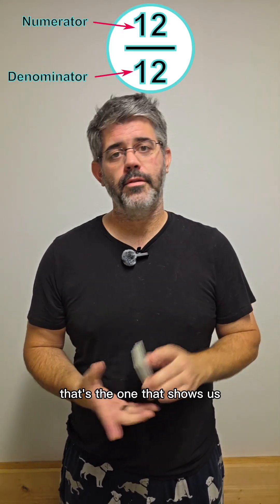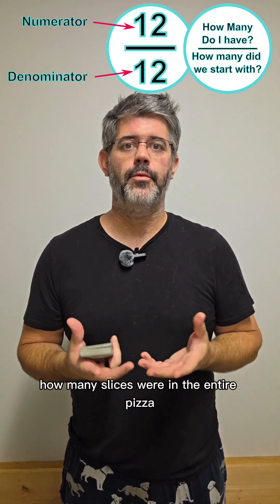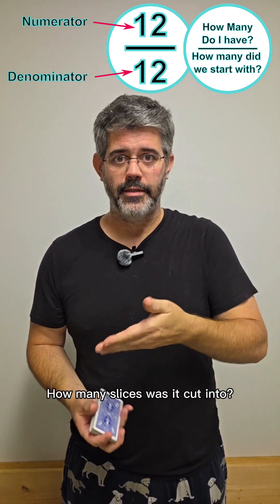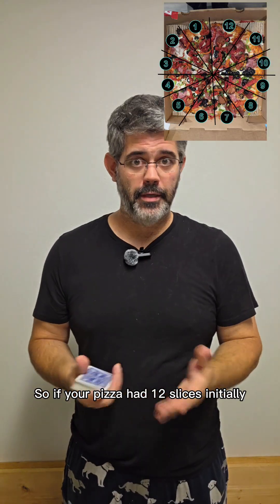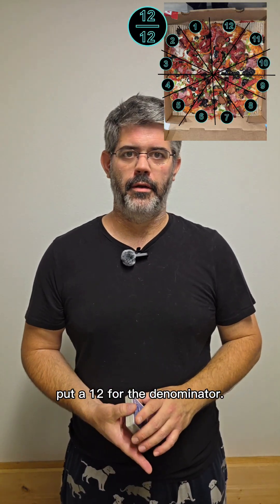The denominator is the one on the bottom. That's the one that shows us how many slices were in the entire pizza when we first got it. How many slices was it cut into? So if your pizza had 12 slices initially, put a 12 for the denominator.